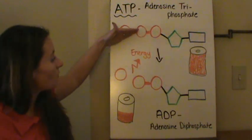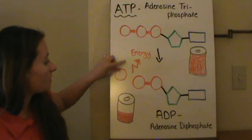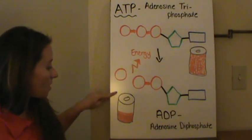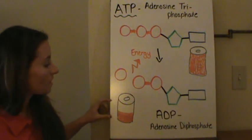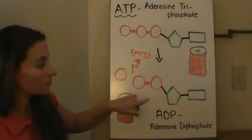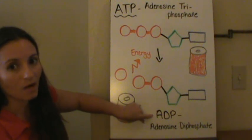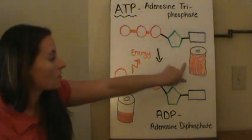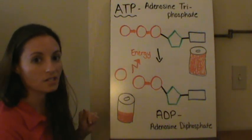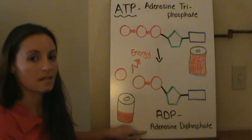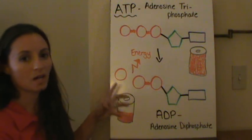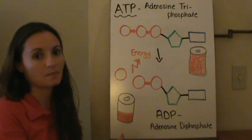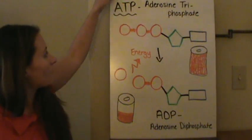To use that energy, what has to happen is one of the bonds between the phosphates must be broken. It breaks the bond between the phosphates and releases the energy for our body to use. When it does that, our battery goes down to half full — we're no longer a triphosphate. We only have two phosphate molecules left, so we now have an ADP molecule, or adenosine diphosphate. ATP is the full battery; we break away a phosphate, release energy, and are left with ADP and only a half-full battery.